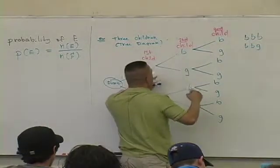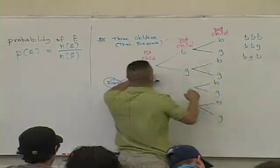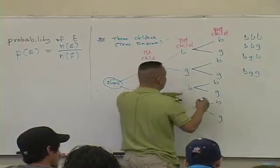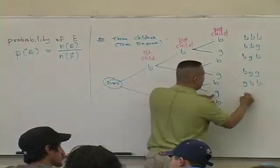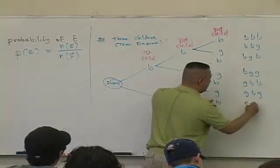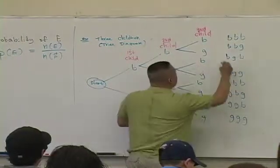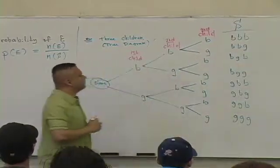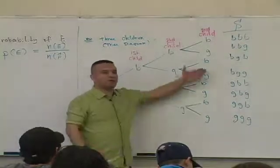Okay, BGB, BGB, GBB, GBG, BGB, and finally what? You guys have just generated the sample space. This is every possible outcome associated with having three children.